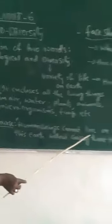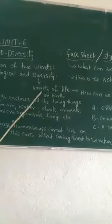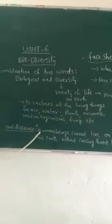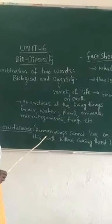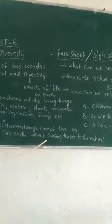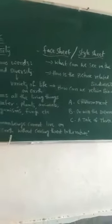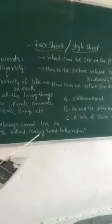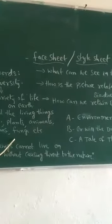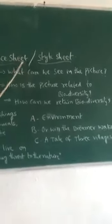Human beings cannot live on this earth without causing threat to the nature. We have to write this statement and we can participate in a debate and group discussion. This oral discourse — 'Human beings cannot live on this earth without causing threat to the nature' — shows that human beings are responsible for nature's degradation. So try to analyze and assimilate this once again.